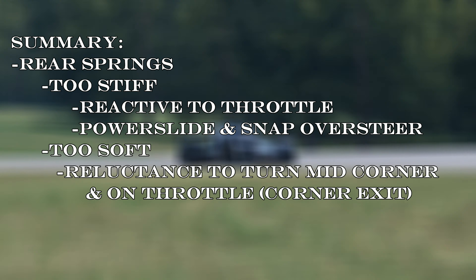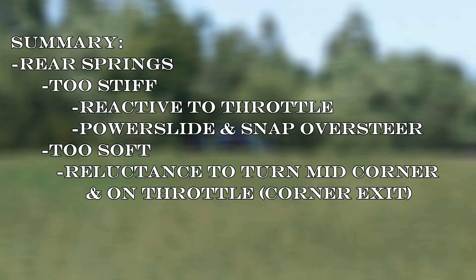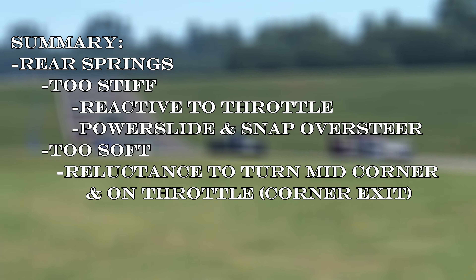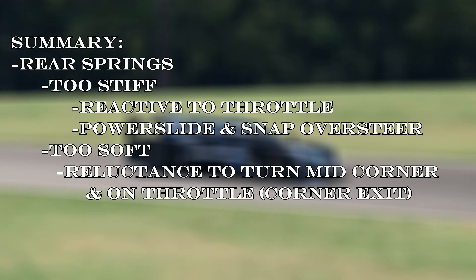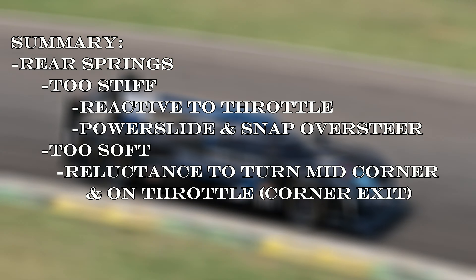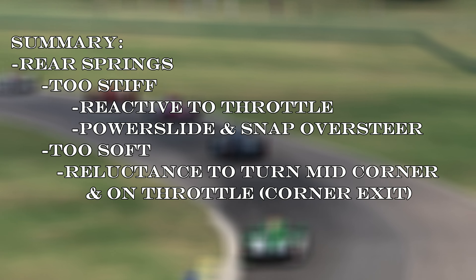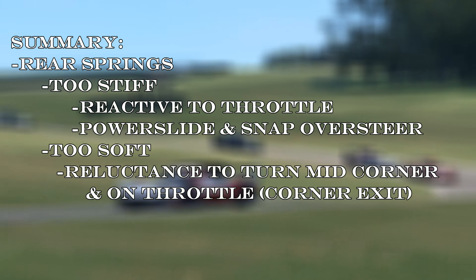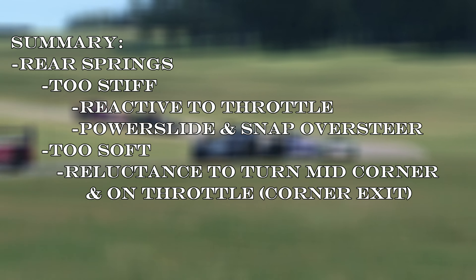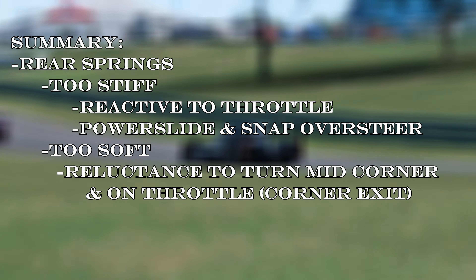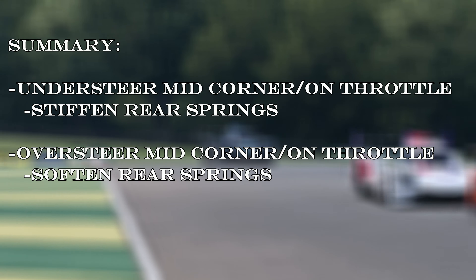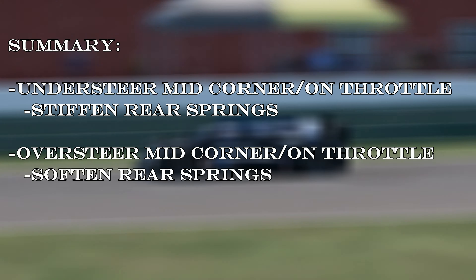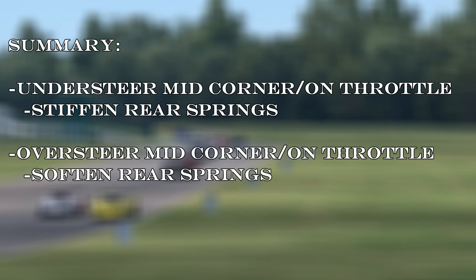Stiff rear springs will be reactive to throttle inputs. The tires will lose traction with throttle inputs easily, leading to slides mid-corner and on exit — sometimes a controllable power slide like the trainer here, but more often with high-powered vehicles, snap oversteer. Soft rear springs, the opposite: the rears will be gripping nicely mid-corner, making the car want to go straight, and the car will continue this reluctance through the exit. If your car is understeering mid-corner to exit, consider stiffening the rear springs. If your car is oversteering mid-corner to exit, consider softening them.